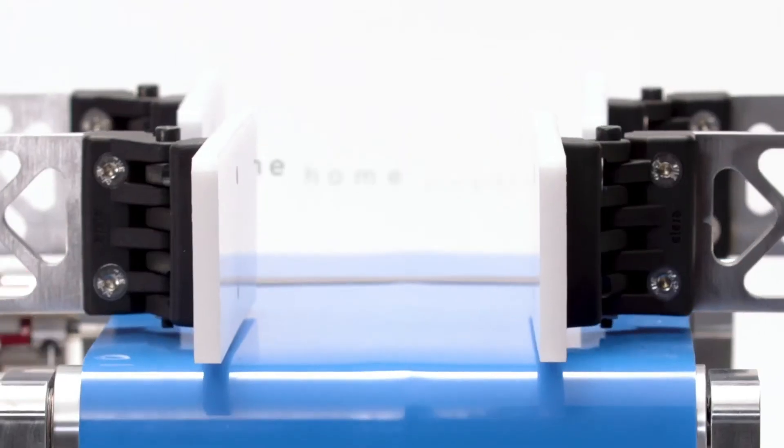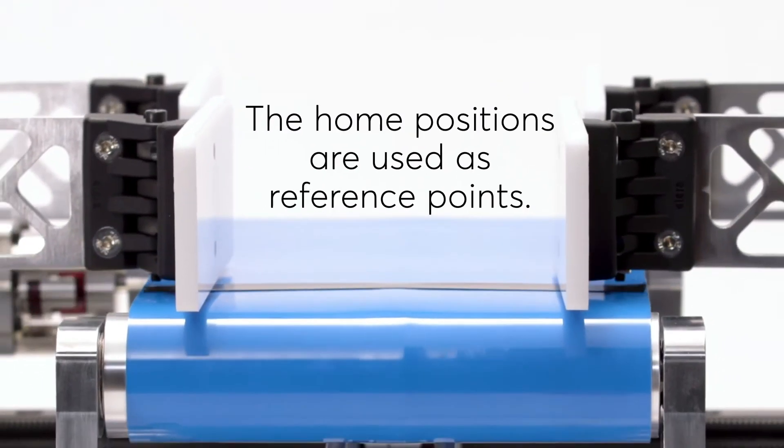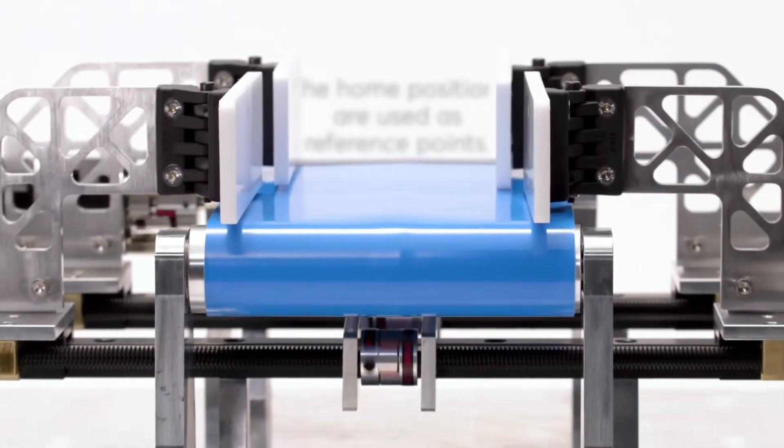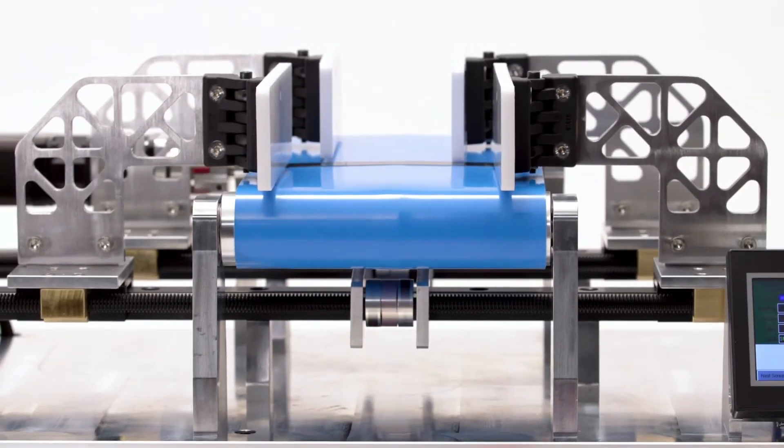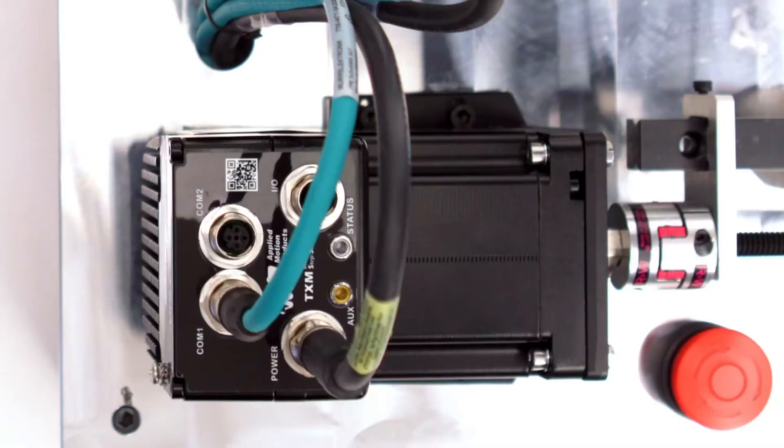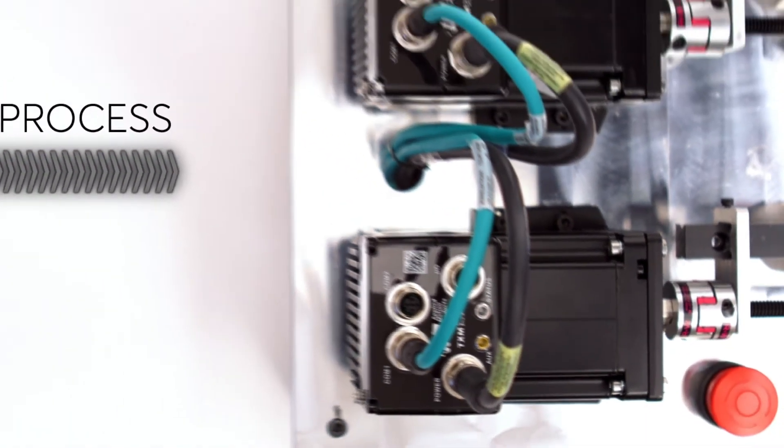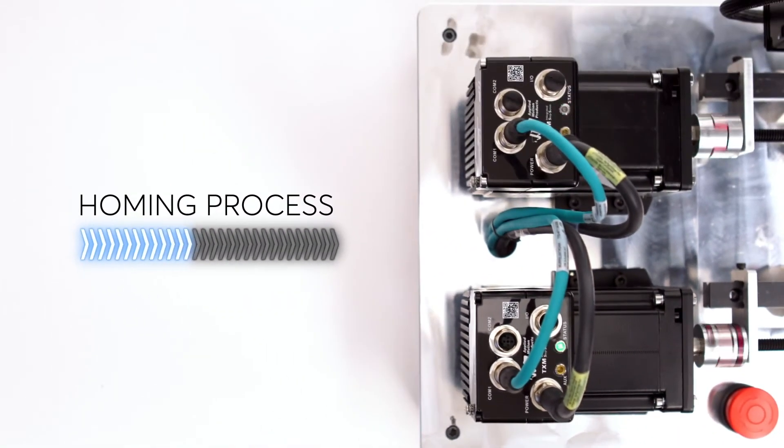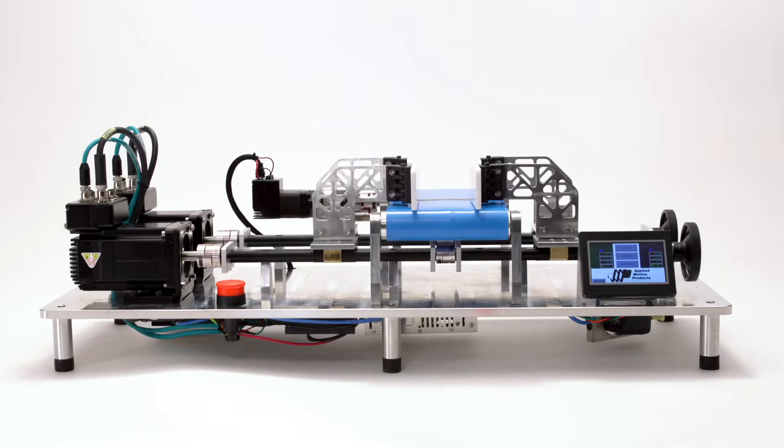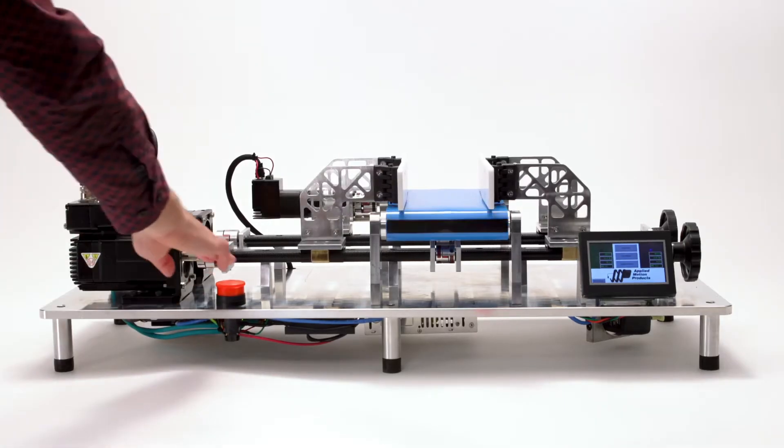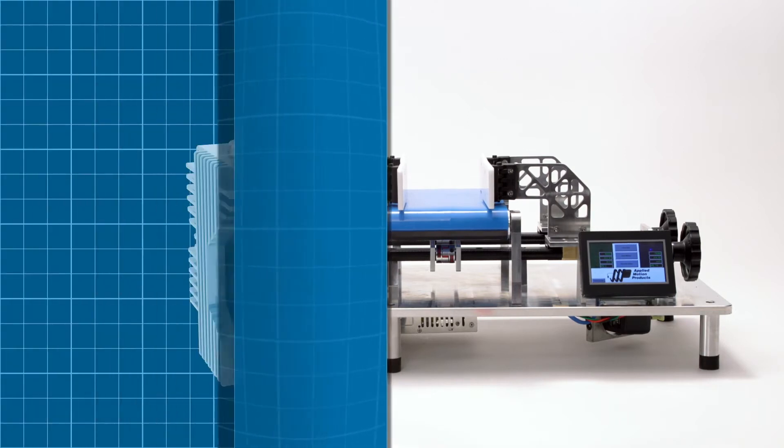The home positions are then used as reference points for all coordinated movements that happen during normal operation. The trade-off for accurate positioning is that homing routines take time to execute. The time spent homing motors is time spent not producing parts, and this is especially problematic for machines that are regularly powered off.